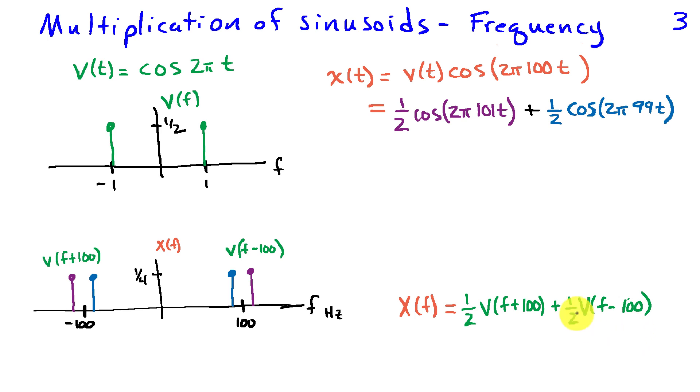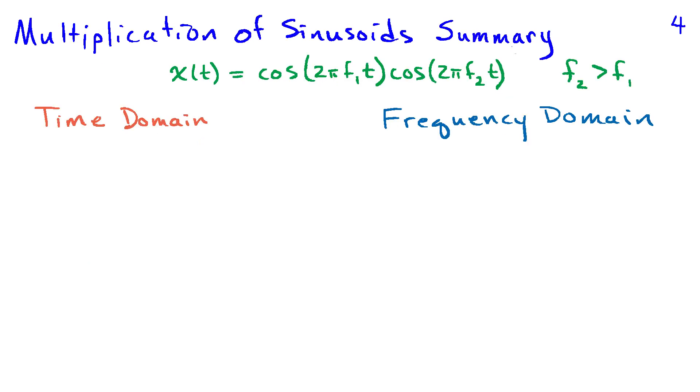So when we think about the spectra, we can interpret this as taking the spectrum of V and shifting it to the right by 100 hertz or to the left by 100 hertz. This is a very powerful idea that we'll exploit in a subsequent video when we talk about amplitude modulation in communications.